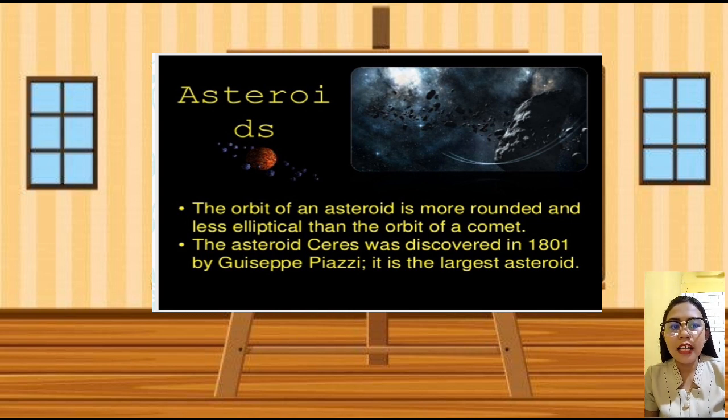Asteroids are small bodies that orbit a larger object in space, but they are different from the moons of the planets. Asteroids can have carbon, stone, or metal in it.